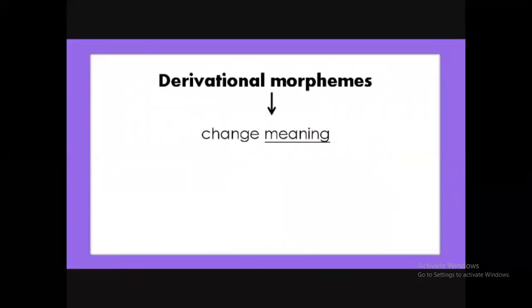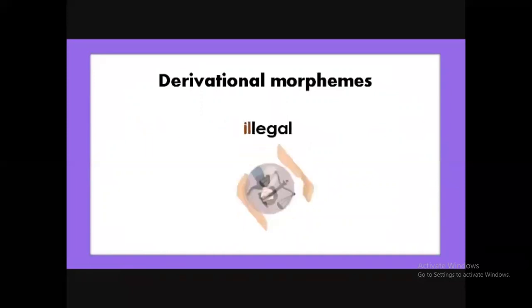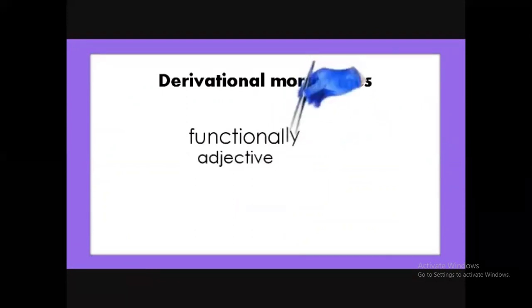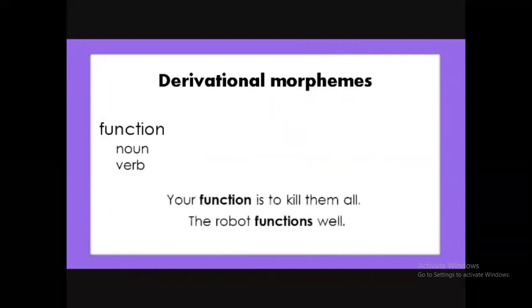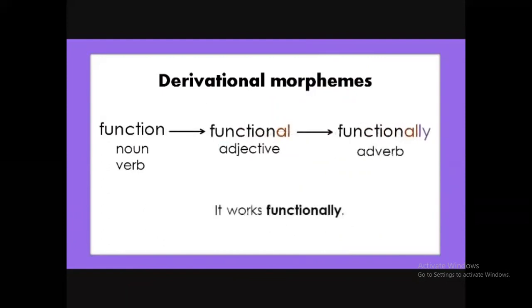Derivational morphemes are the ones that, when added to a word, they can change the meaning and/or the class of the word. Consider the word 'legal' — when you add the morpheme 'il-,' you're changing the meaning entirely: 'illegal.' With 'functional': you're adding '-al' to 'function,' changing a noun or verb into an adjective. And if you add another morpheme '-ly,' you're turning the adjective 'functional' into 'functionally,' which is an adverb. You change the class of the word from noun or verb to adjective, and from adjective to adverb.